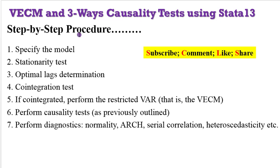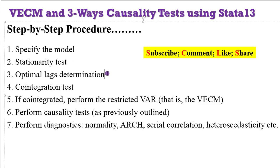What is the step-by-step procedure in Stata? Number one, specify the model — I've shown a three-variable VECM example. Conduct a stationarity test and make sure all variables are integrated of order one. Determine the optimal lag as indicated by the information criterion. Perform the cointegration test, and if results show cointegration, estimate the VECM. After that, obtain causal relationships using the three approaches explained. Finally, go ahead and perform diagnostics.